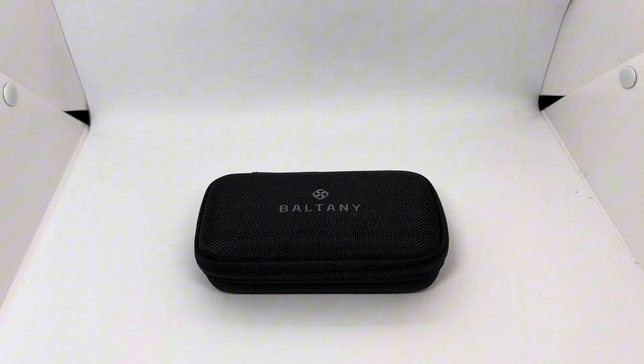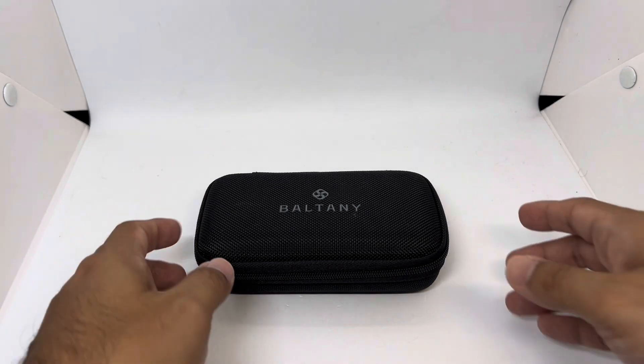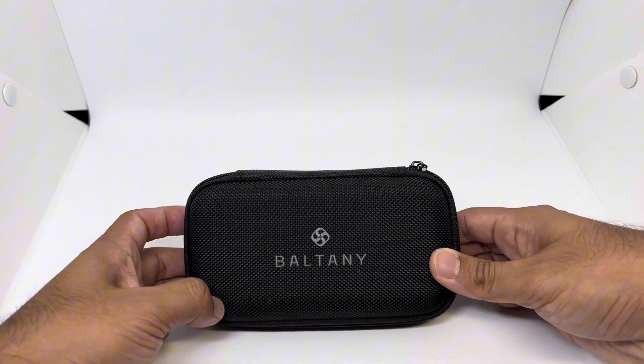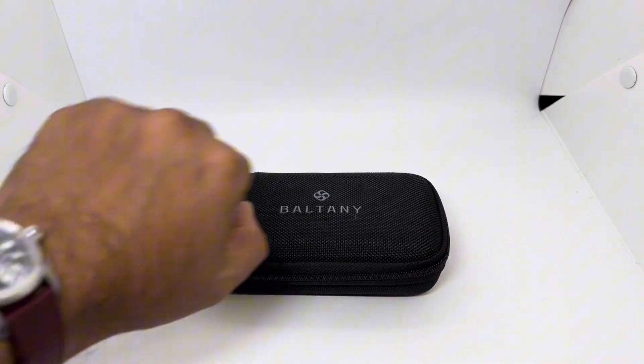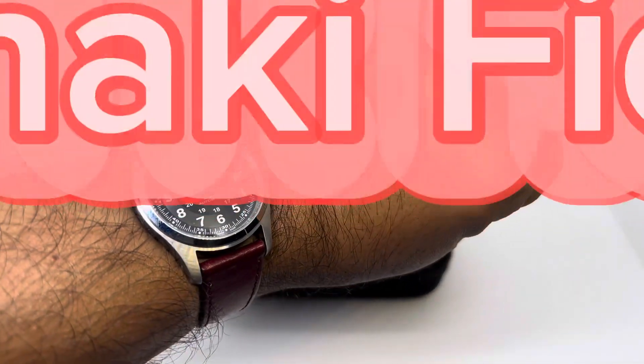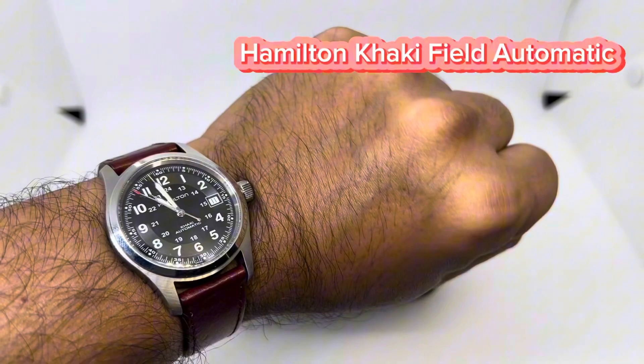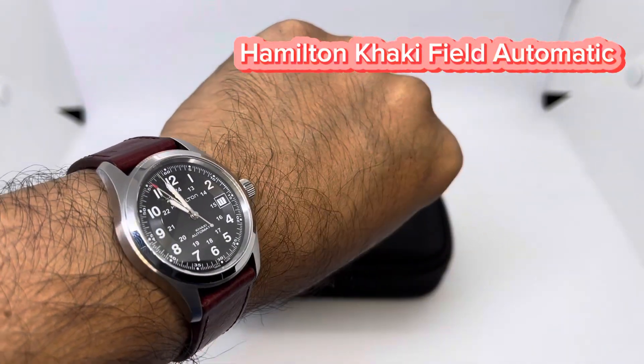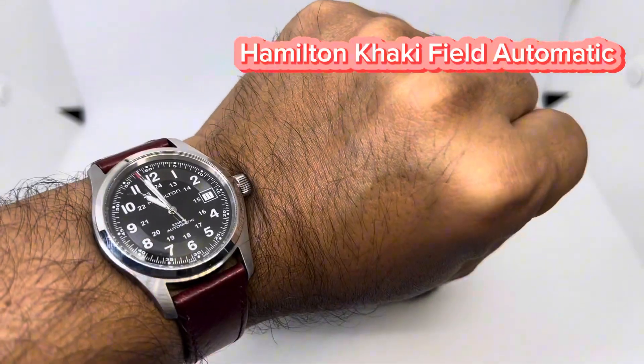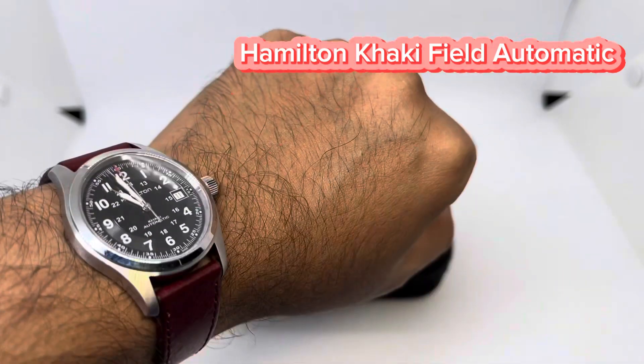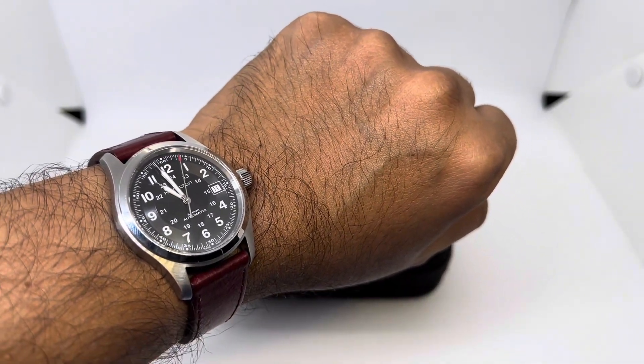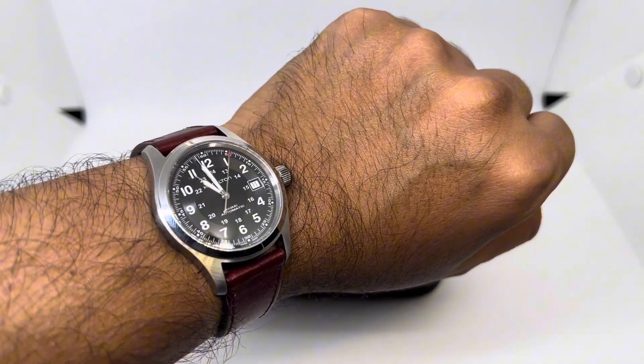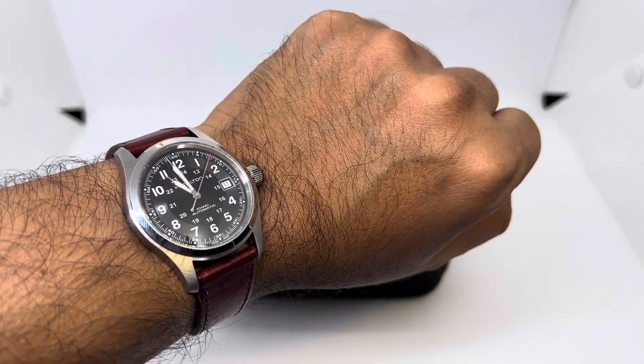Welcome back to my initial review of another Baltany. This time around it is homaging the Hamilton Khaki Field. This is the Hamilton Khaki Field Automatic, available on various internet sites. If you live in Malaysia, you can get this from Lazada or Shopee for close to $500 US dollars, which is a bit annoying.